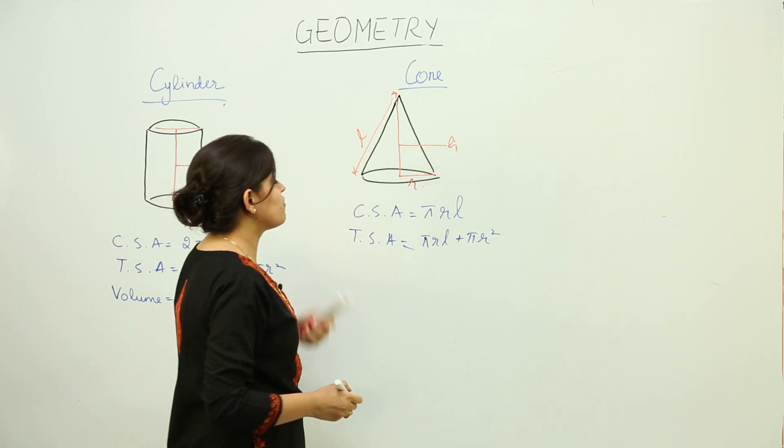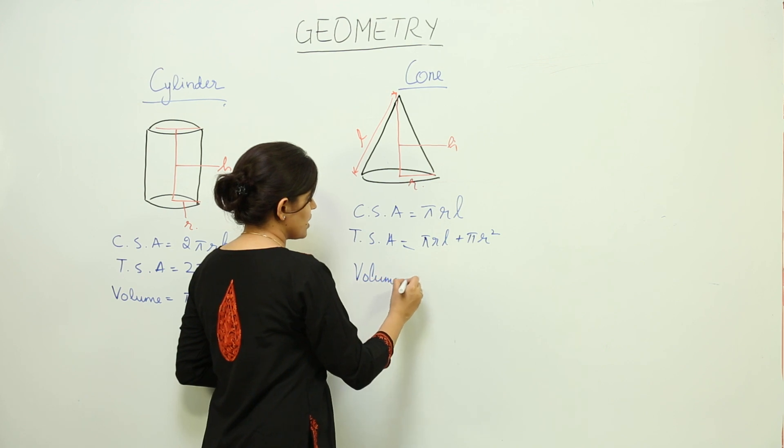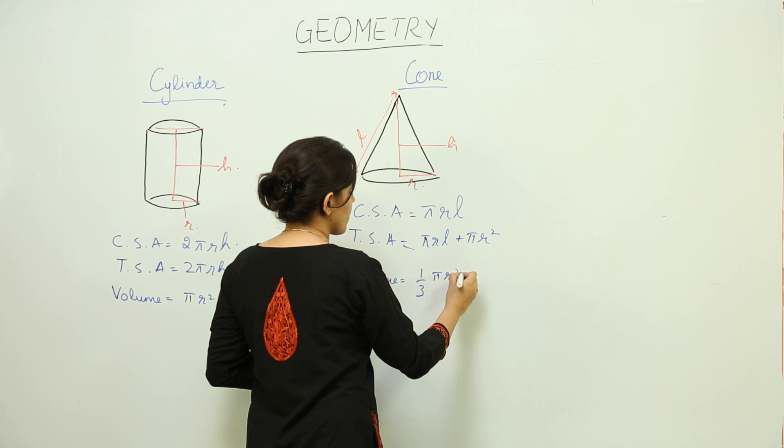Now what is the volume of this cone? The volume of this cone is 1/3 πr²h.